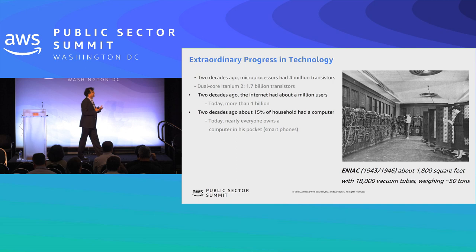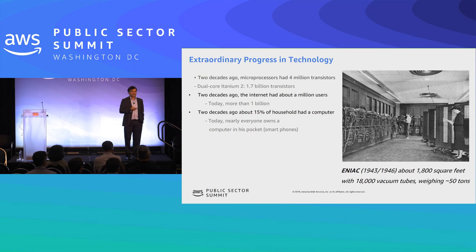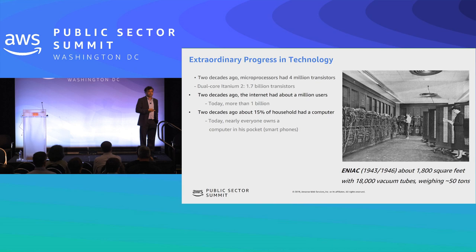Let's step back to see where we came from. We have made extraordinary progress in technology. Do you know what this is? This is the first computer, created in 1946 by the army. It had 1,800 square feet and about 18,000 vacuum tubes. We all have computers in our pockets which are a million times faster than that one.